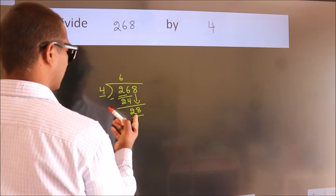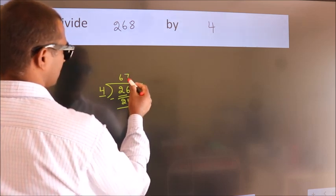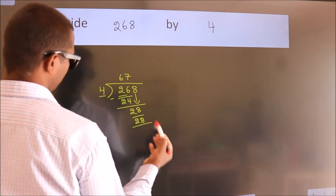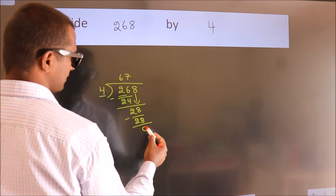When do we get 28 in the 4 table? 4 times 7 is 28. Now we subtract. We get 0.